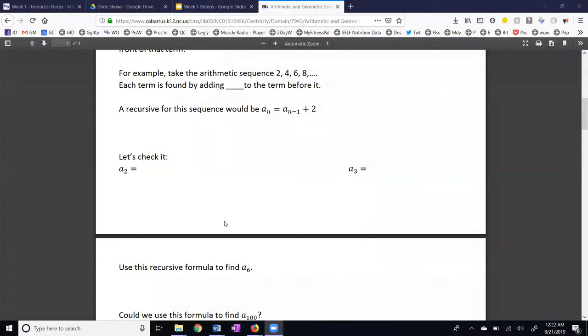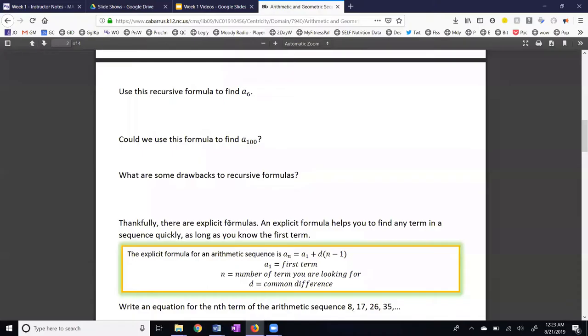Now let's move ahead in our handout. In our sequence, we have 2, 4, 6, 8. A4 is 8, A5 is 10. So if we want to use the recursive formula to find a6, it would look like this: A6 equals a5 plus 2, which is 10 plus 2. Therefore, a6 is 12. Our next question is, can we use this formula to find a100? The problem with that is that in order to find a100, I would need a99. This is one of the drawbacks of recursive formulas.